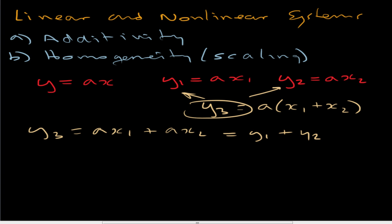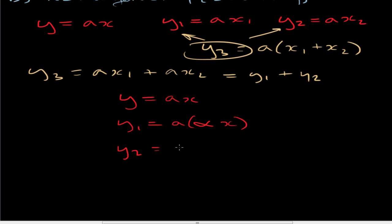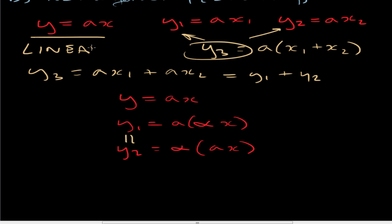Now what about homogeneity? For the equation y equals ax, homogeneity is quite a trivial exercise. I need to multiply the input by some scaling factor alpha — so y1 equals a times alpha x. Then I apply the scaling factor to the entire equation: alpha times ax gives me y2. You can see that both y1 and y2 are the same. It doesn't matter whether I scale the input itself or scale the entire equation — I get the same output. This is called homogeneity, so this equation obeys both additivity and homogeneity; in other words, it is linear.